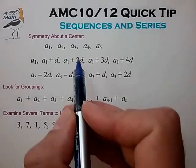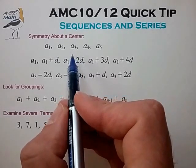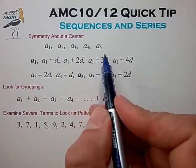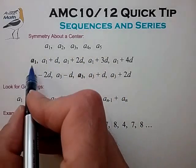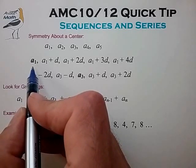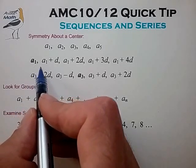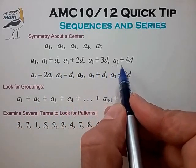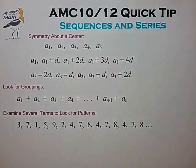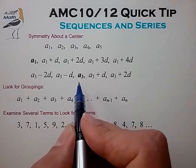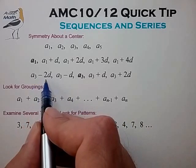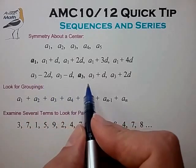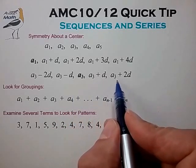The first tip is to use symmetry around a center term. For example, assume we have an arithmetic sequence of five terms. We usually describe this sequence in terms of the first term, sometimes called the anchor term. So in this example, we express the five terms as A1, A1 plus D, A1 plus 2D, A1 plus 3D, and A1 plus 4D. But for some AMC problems, it's very helpful to express the sequence in terms of the center term: A3 minus 2D, A3 minus D, A3, A3 plus D, A3 plus 2D.